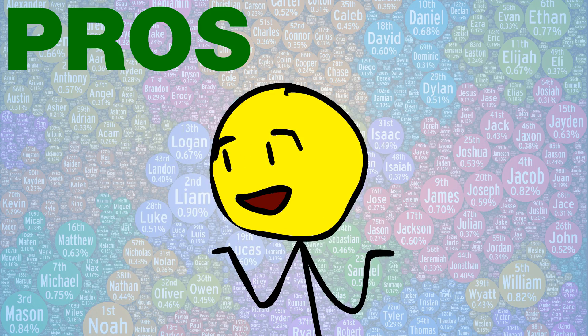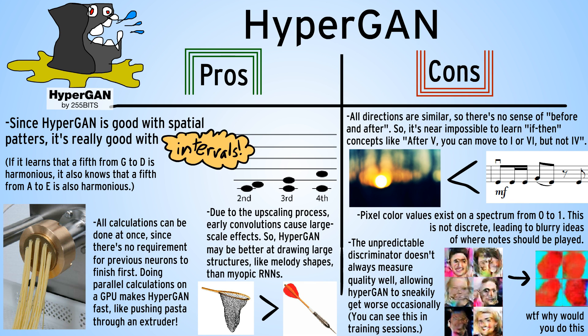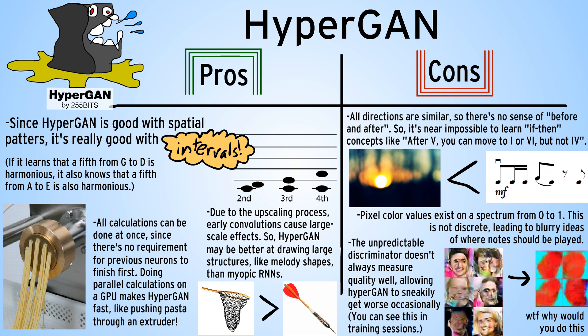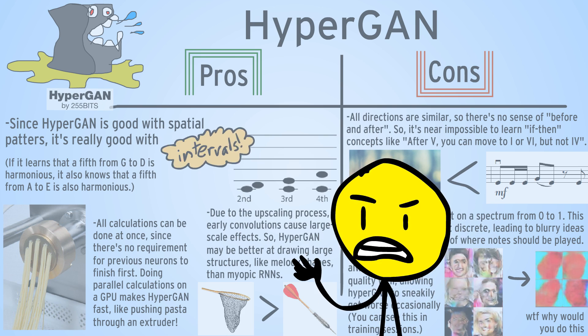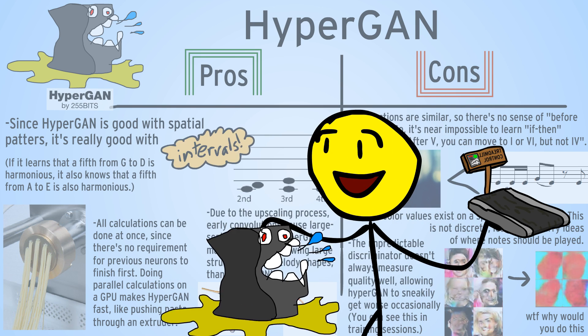Anyway, are there any pros and cons? Of course. I originally read these pros and cons out loud, but that took too long and the video got boring, so if you want to read them, you can. The main downsides are that there's no sense of time and the training progress can go backwards. But none of those caveats even matter, because HyperGAN's training process is by far the prettiest to watch. It's so mesmerizing, it makes me forget all those other problems.